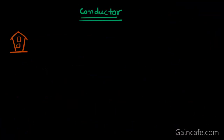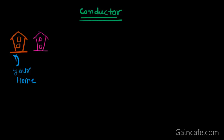Now we will learn about conductors. In this case, your home and your friend's home are very close together, so you don't need a bike to deliver anything — you can go very easily no matter how little energy you have. Let's understand this in terms of electrons.